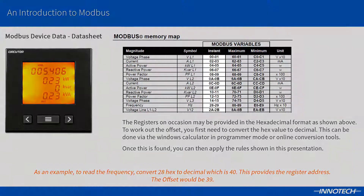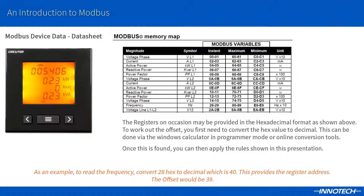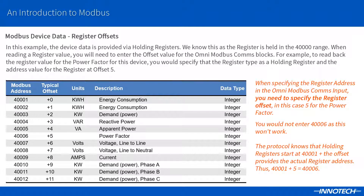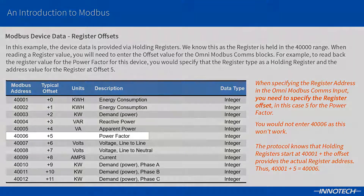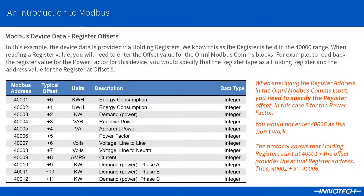Some device documentation may provide the register address in the hexadecimal format. This will need to be converted back to a decimal value to work out the correct offset to use. This can be easily done via the Windows calculator in programmer mode or online converters. An important item to note when setting up the Omni Modbus comms blocks is that the register address is specified as the offset. Looking at the table we can see that the holding registers start at 400001. Notice that the offset is 0 as this is the first register — 400001 plus 0 equals 400001. If we look at the register for the power factor it is register address 400006 with an offset of 5, as 400001 plus the offset of 5 produces the actual address of 400006. If you don't have the offset it is generally the register address minus 1. However, check the datasheet as manufacturers can provide the Modbus data in creative ways which may not follow the typical Modbus model.